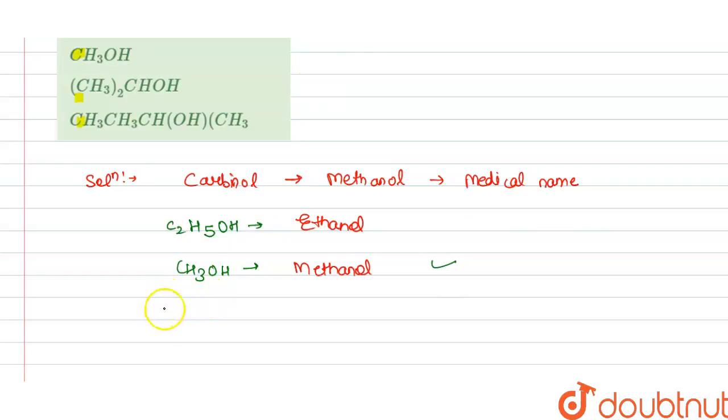So this is (CH3)2CHOH. So we know that this is our propane-2-ol.